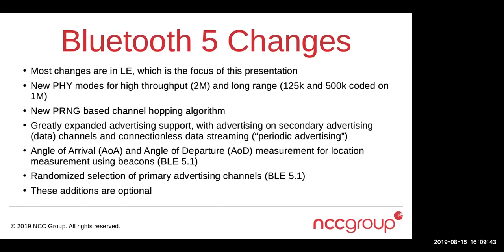Another significant change is a new channel hopping algorithm. In Bluetooth 4, channel hopping in low energy was based on a hop increment — the next channel would be the previous channel number plus the hop increment modulo the number of channels. In the new hopping algorithm introduced in Bluetooth 5, there's a pseudorandom number generator used to compute the channel hopping sequence.